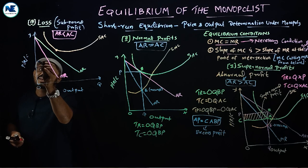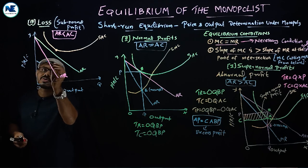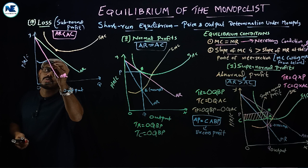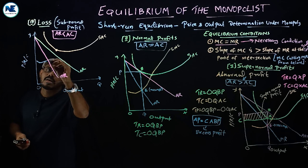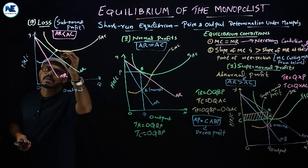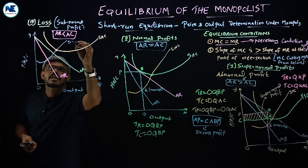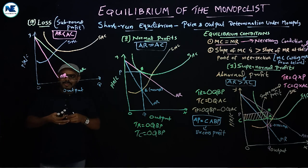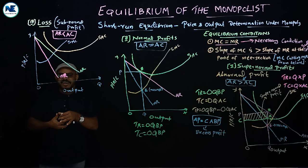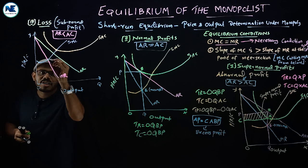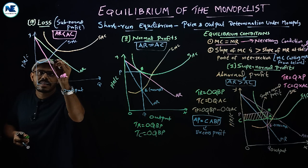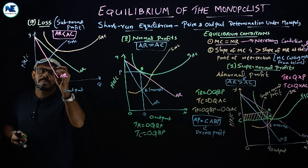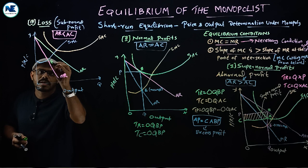Here is the marginal cost. The marginal cost curve should be short — it is U-shaped. Now, if we identify the equilibrium point where MC equals MR, that gives us point E on the graph.